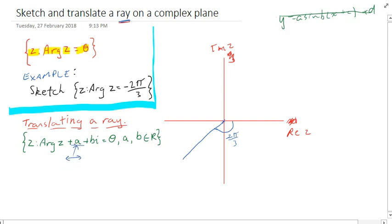Let's talk about what happens. The a translates left and right because that's our real value and it's going to move our ray left and right in the real plane. The imaginary component is going to move things up and down.